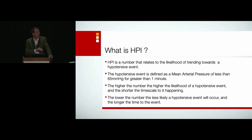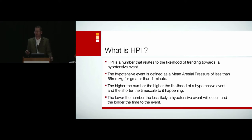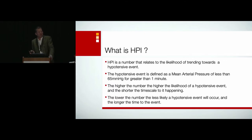Currently the event is predefined — a MAP of less than 65 for one minute or more. Essentially, the higher the HPI number, the more likely you are to be hypotensive in the future and the shorter the duration to hypotension occurring. The lower the HPI, the less likely you are to be hypotensive, and if it does occur, it's much further forward into the future.